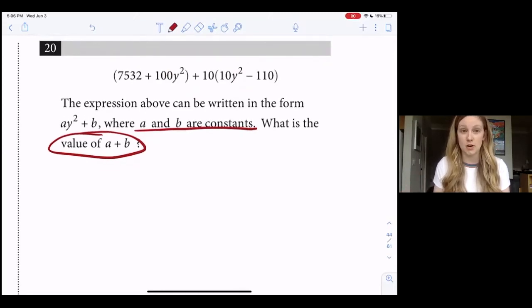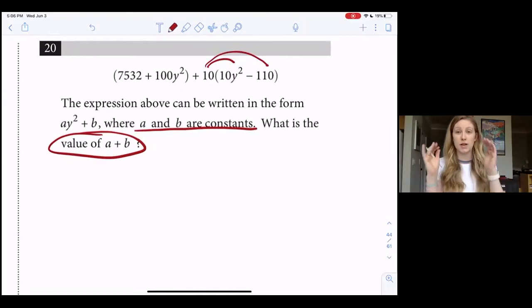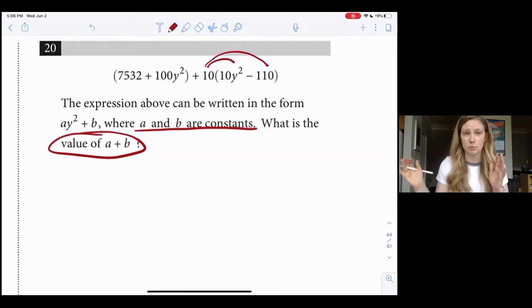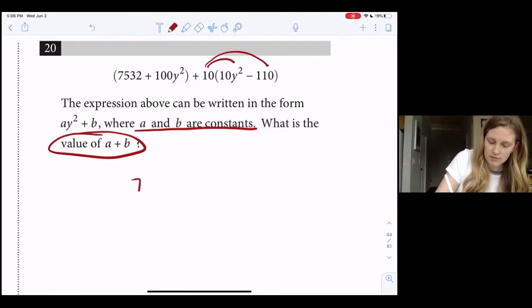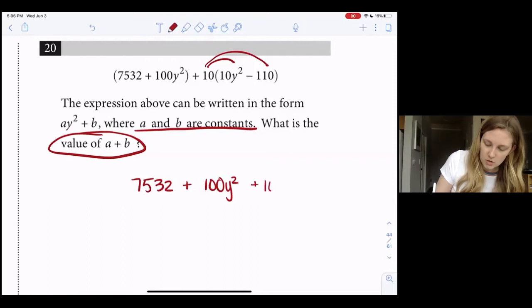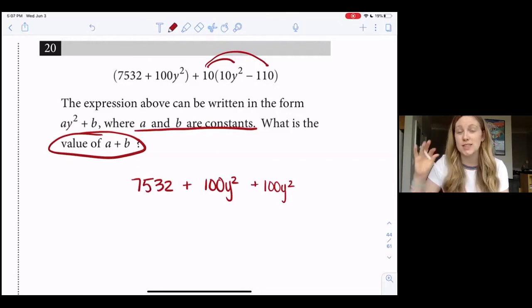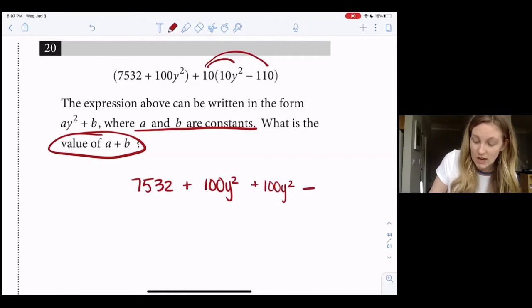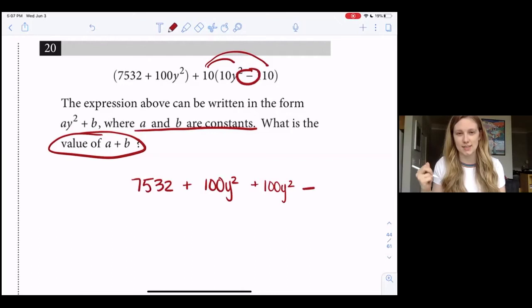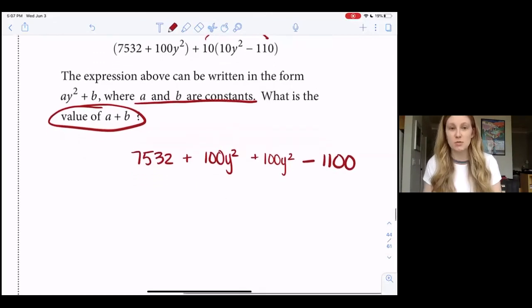Okay, so the first thing I'm going to do is distribute this 10. It's really important we distribute because of the parentheses - that 10 belongs to both of those terms, we have to multiply all the way through. So that's going to give me 7532, careful not to switch your numbers around like I just did. Okay, so the first two terms stay the same. 10 times 10 is 100, so that's going to be plus 100y². And then 10 times 110 - a good trick for multiplying by 10, you just add a zero to the end of the other number - and I'm also being very careful not to ignore the fact that this says minus, so we don't accidentally want to write plus because obviously that would give us the wrong answer. That's 1100.